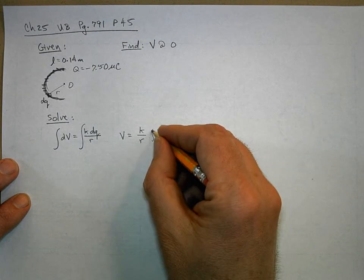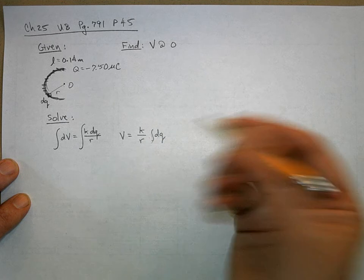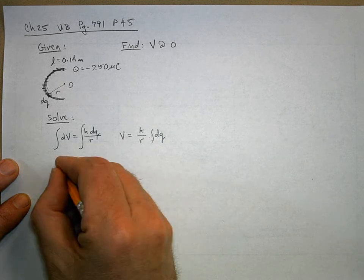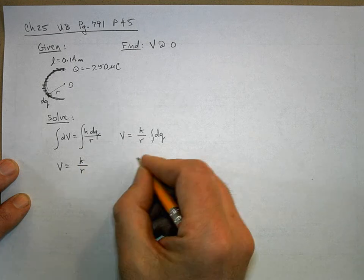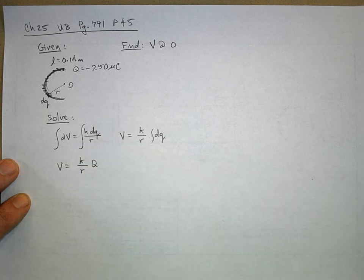And when I sum up all the little dQs I get the total charge. So the voltage is just going to be K over R times Q.